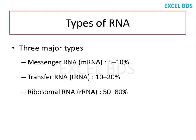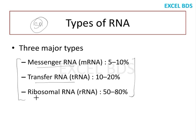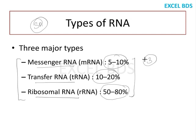The different types of RNA can be a short answer question in the exam. There are many types, but majorly we have three types of RNA: messenger RNA, transfer RNA, and ribosomal RNA. The majority of RNA present in the cell is ribosomal RNA, next is transfer RNA, and then messenger RNA.